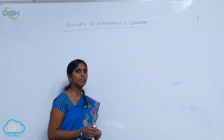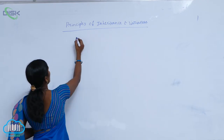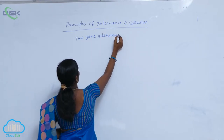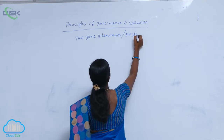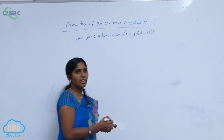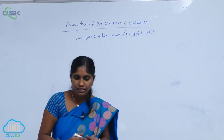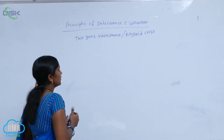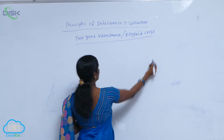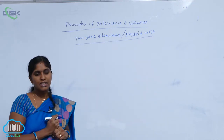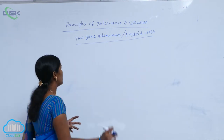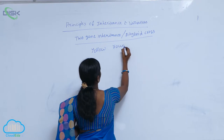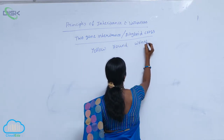After the monohybrid cross, Mendel conducted the dihybrid cross, explained in the form of two gene inheritance. Dihybrid cross involves two genes in the cross that result in few types of progeny. For his cross, he selected two characters: yellow, round, wrinkled, and green — these are the four contrasting characters.